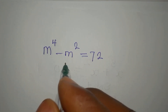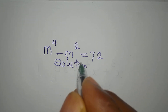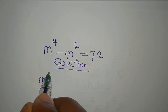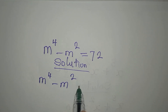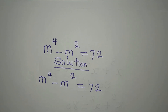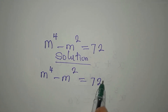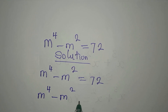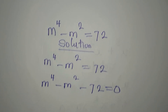Hello everyone, let's provide the solution to this problem very quickly. We have m to the power of 4 minus m to the power of 2 equals 72. The next step is bringing the constants to the left, so we have m to the power of 4 minus m to the power of 2 minus 72 now equals zero.